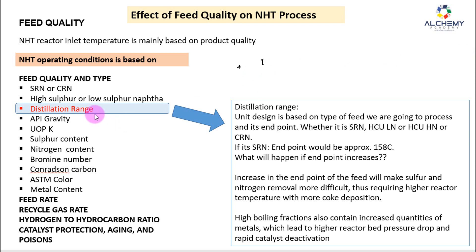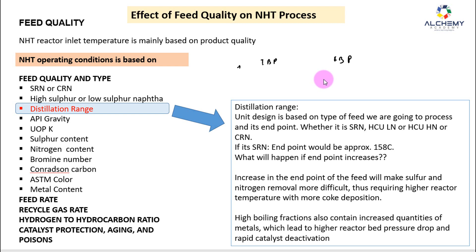Now I'll discuss the distillation range — how much is the IBP (initial boiling point) and the FBP (final boiling point) of the naphtha being processed. Based on that range, the NHT reactor operating conditions are fixed. The design is based on the type of feed and its end point — whether it is SRN, HU light naphtha, HU heavy naphtha, or CRN — and the inlet temperature and pressure are set accordingly.